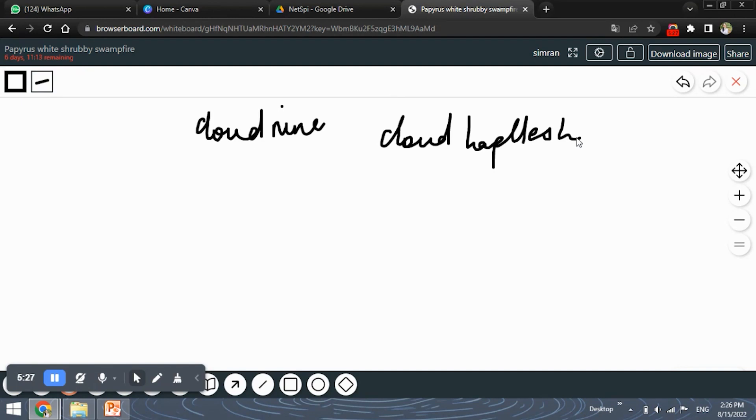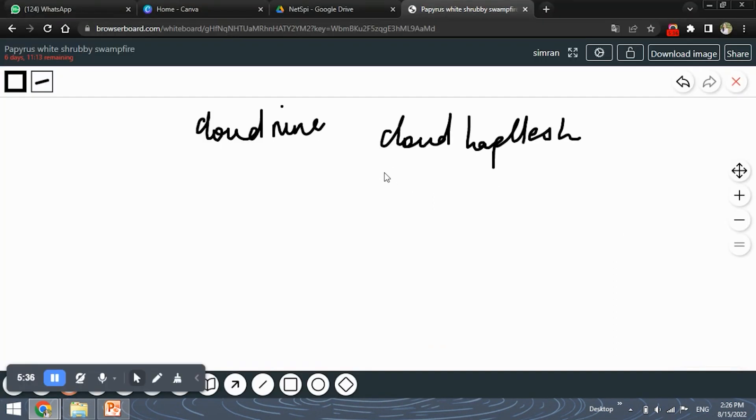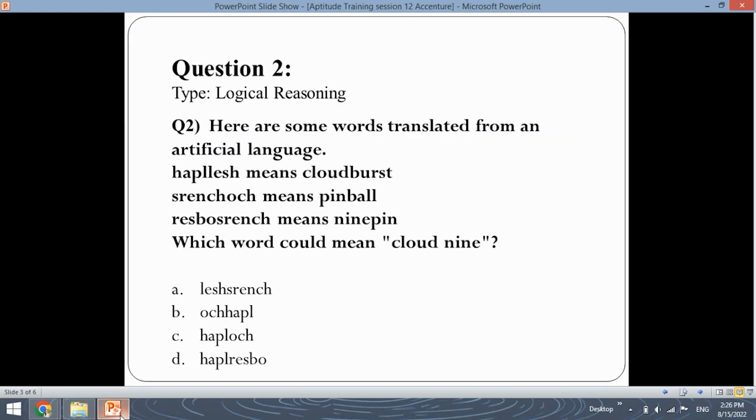Similarly, check out in which word nine is present. So, you see in this resposrench means nine pin. Nine is present in resposrench. Now, you need to understand from the options, here it is nine pin and cloud burst. So, from the options, if you see that option D, haplrespo, should be the answer for this question.